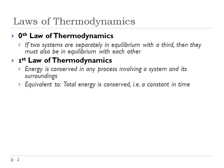The first law, which we're going to be using a lot in this course, is basically a statement that energy is conserved in any process involving a thermodynamic system and its surroundings. The energy may change form — gravitational into kinetic, kinetic into potential — but overall the total energy of the system is conserved. It's a constant that does not change with time.